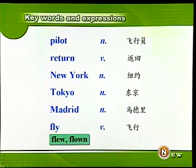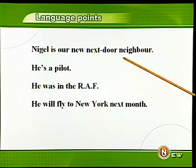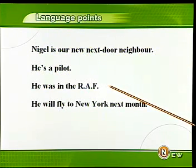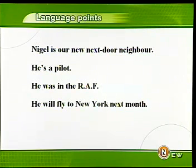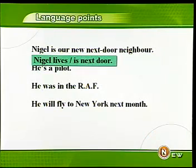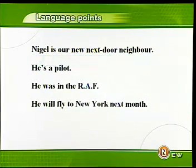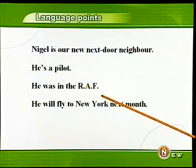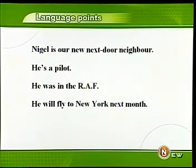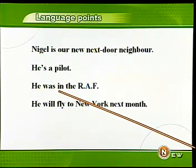Fly是一个不规则动词，它的过去式和过去分词分别是flew、flown。Nigel is our new next door neighbor. He's a pilot. He was in the RAF. Nigel是我们新搬来的隔壁邻居，next door neighbor就是隔壁邻居。如何说Nigel就住在隔壁呢？Nigel lives next door，或者Nigel is next door。The RAF，也就是The Royal Air Force，英国皇家空军。他曾经在英国皇家空军任职，曾经是说过去的事情，所以动词用了was。